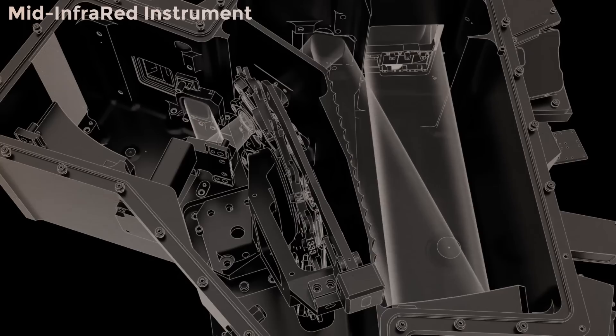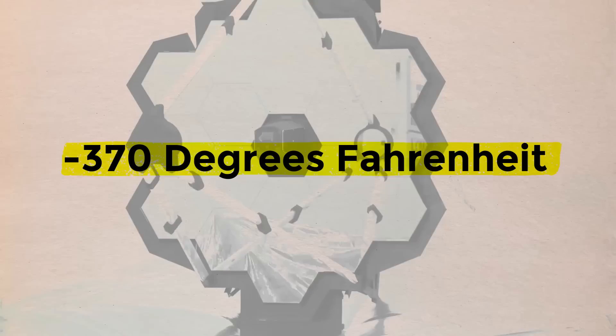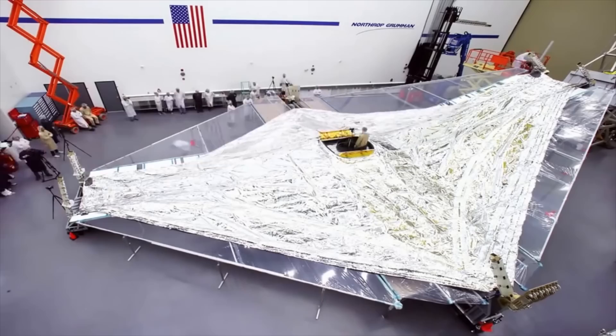To function, the instruments on board must be kept at extremely low temperatures, minus 370 degrees Fahrenheit or lower. The enormous sunshield keeps the equipment cool by shielding the telescope from the sun's heat.